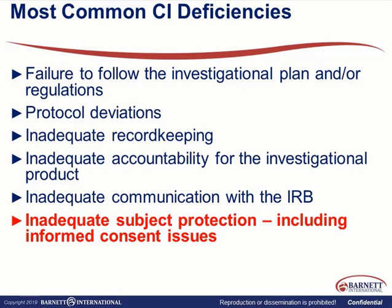The order in which these have been found has not changed in eight years. In the past, we used to see informed consent as being the number one finding — we're getting better, but not perfect; it's down to number six. The number one top finding is failure to follow the protocol and the regulations. Number two is protocol deviations. Number three is inadequate record keeping, which sometimes includes accountability records for the device or drug. Number four is inadequate accountability for investigational product. Number five is inadequate communication with IRB. And number six is still inadequate subject protection or things that concern informed consent.